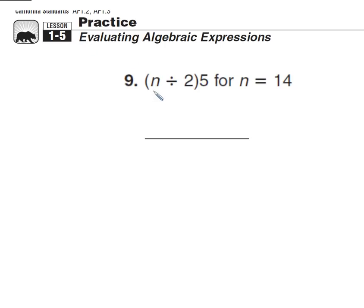Algebraic expressions have variables in them. So in this case, n divided by 2 times 5. And n here is a variable because it can change. We can plug in different values for n, the variable, and they could have picked any letter to represent that variable. Oftentimes you see x. And the other numbers are constants, so 2 and 5 are constants. They don't change, but we'll be plugging in different numbers for the variable n. And in this case, we're going to plug in the number 14 for n.